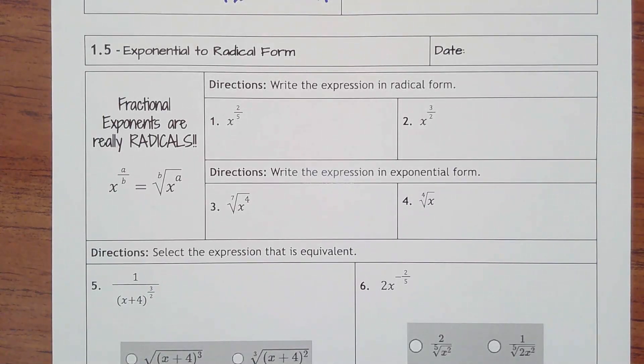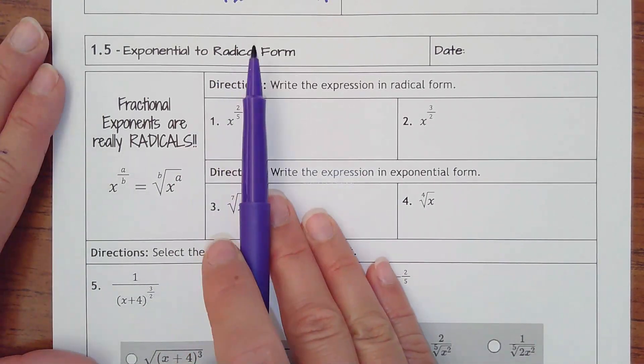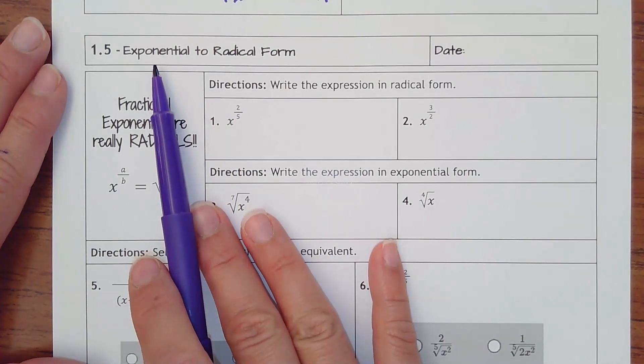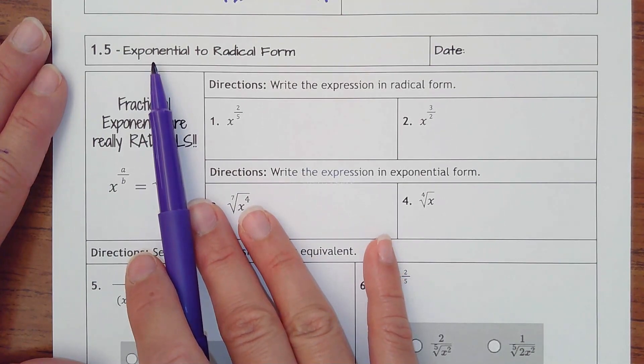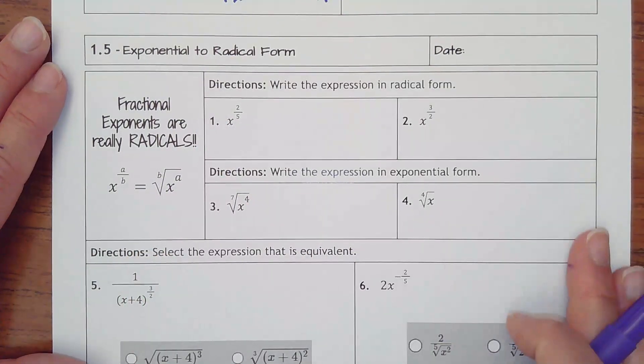1.5 is exponential to radical form. We haven't talked about radicals yet, but in order to do some of these exponent problems in this chapter, we have to know what radicals are.